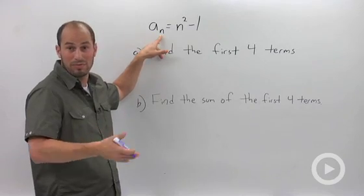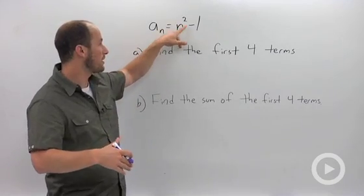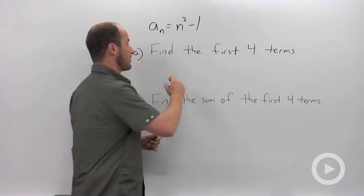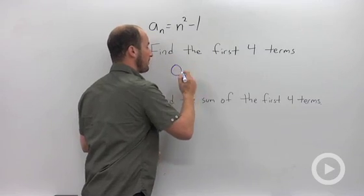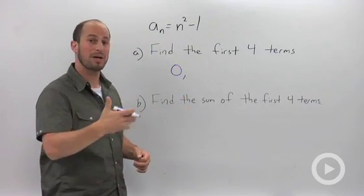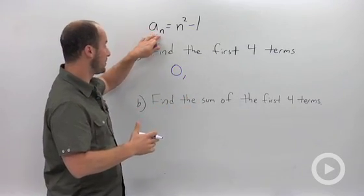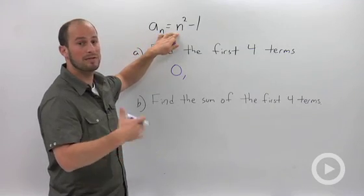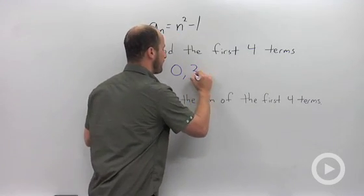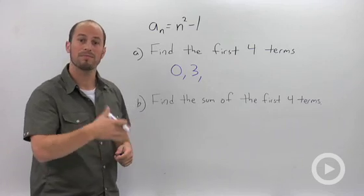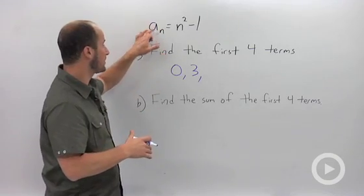When we plug in 1: 1² - 1, that's just 0, so our first term is 0. To find the second term we plug in 2. a_2 = 2² = 4, minus 1, which gives us 3.